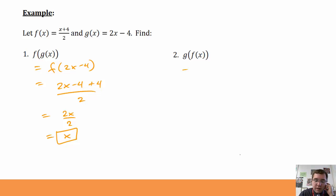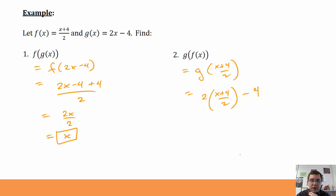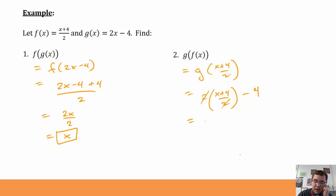For g of f of x, I take all of f and plug it into g. I take x plus 4 over 2 and compute g of that, which is 2 times x plus 4 over 2 minus 4. Multiplying that fraction by 2 cancels the denominator and gives x plus 4, then minus 4, and x plus 4 minus 4 is x. Also the identity function.